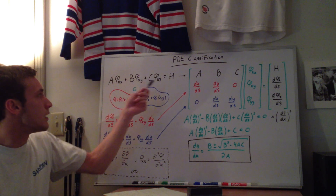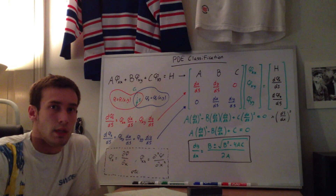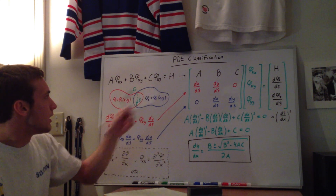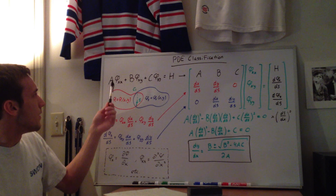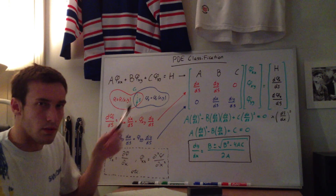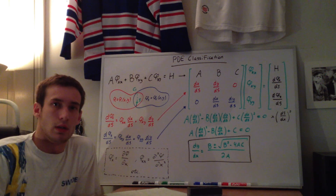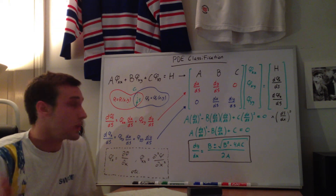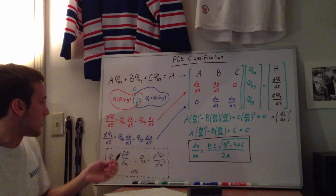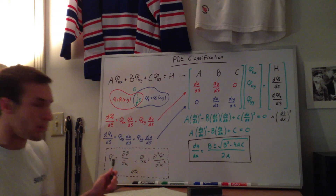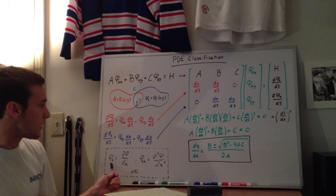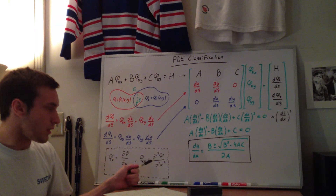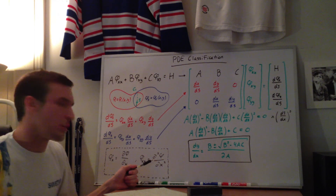We're looking at a second order PDE generalized, so we just have these coefficients a, b, c, and then h is the right hand side. Phi is any arbitrary variable — it could be velocity, temperature, pressure, anything like that. The notation I use here is that phi sub x is just the first derivative with respect to x of phi, and phi sub xx is the second order derivative of phi with respect to x.